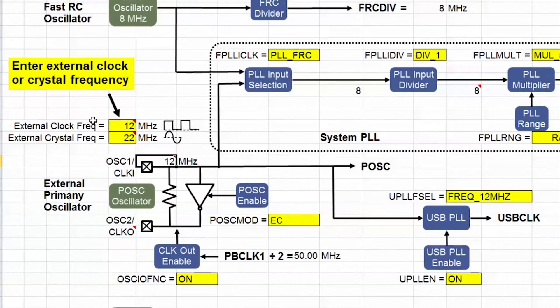The primary oscillator mode setting configures the oscillator to accept an external clock, or high speed crystal input. Note the value I entered for the external clock here is shown on the input here, because of the primary oscillator mode setting here.